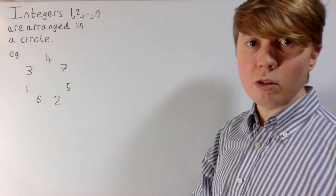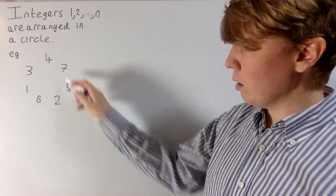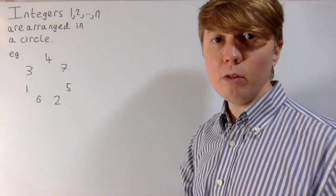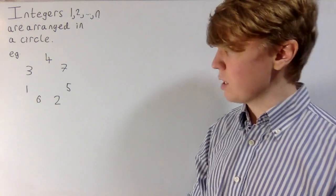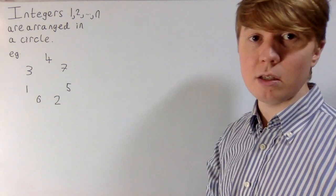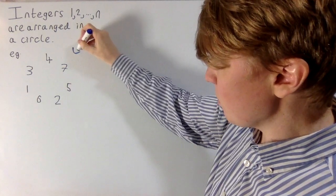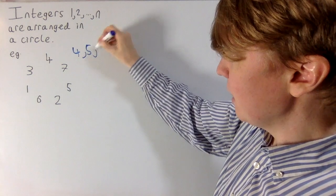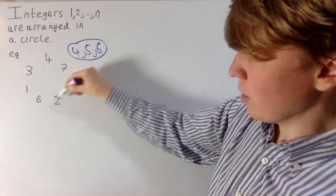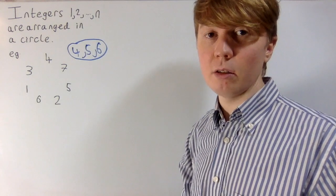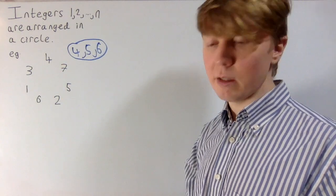We're interested in the integers from 1 to n. If you rearrange these in a circle however you like, we're going to be interested in sequences of consecutive integers that are all the same distance apart from each other on this circle. For example, with n equals 7, you might spot that the integers 4, 5, and 6 are consecutive and they're also all the same distance apart on the circle.